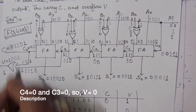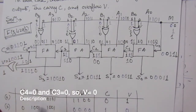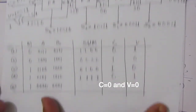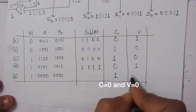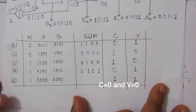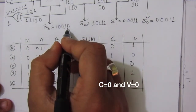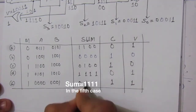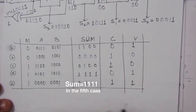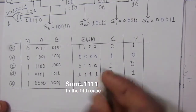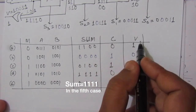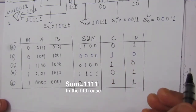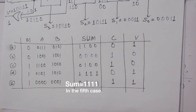The carry output C is 1 and the overflow V is also 1, so the sum for the last case is 0111. These are the sum, carry, and overflow values for all five cases. Thank you for watching. If you have any questions, please put them in the comment section below, and please like, share, and subscribe to my channel.